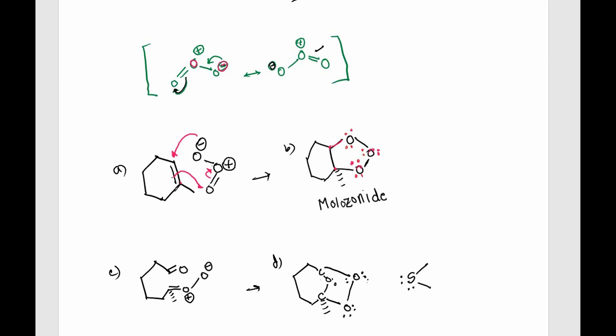Now what happens is that one of the lone pairs of electrons on the oxygen atoms will try to reform a double bond with this carbon atom. So the bond between carbon and carbon will break and a double bond between carbon and oxygen will form. That will break the bond between oxygen and oxygen, leaving a lone pair of electrons on this oxygen atom. We'll have this intermediate where we have a double bond between carbon and oxygen here, and a double bond between carbon and oxygen here. This oxygen has two lone pairs of electrons, but after forming a double bond with this carbon atom, it will be left with a positive formal charge.